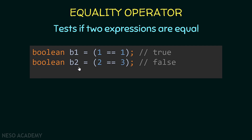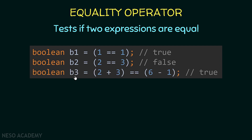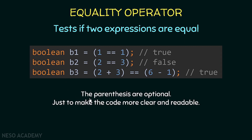Let's see another example. I'm initializing b2 to be equal to (2 == 3). I'm comparing two and three if they are equal. Two is not equal to three, so this expression will return false and false will be stored inside b2. Now for b3, I'm initializing it to (2 + 3 == 6 - 1). Two plus three equals five, and six minus one also equals five, so we have five equal equal five, which gives us true. So b3 will be equal to true. The parentheses are optional — I used them to make the code more clear and readable.